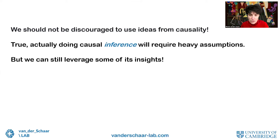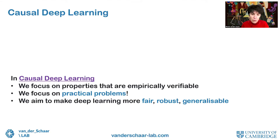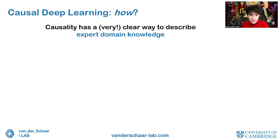These are great properties of causal models, but there is a problem: it is generally impossible to uniquely identify the true causal graph from observational data without making very strong assumptions. So what we propose in causal deep learning is to not be discouraged by this need for strong assumptions, but instead still capitalize on the powerful ideas from causality. Causal deep learning will focus on empirically verifiable properties, practical problems, and the overall goal of making deep learning more fair, robust, and generalizable.